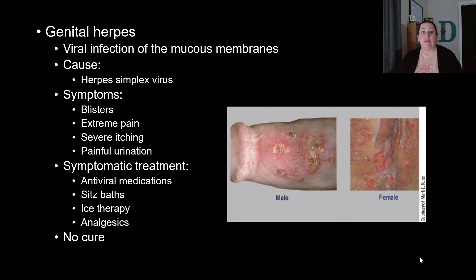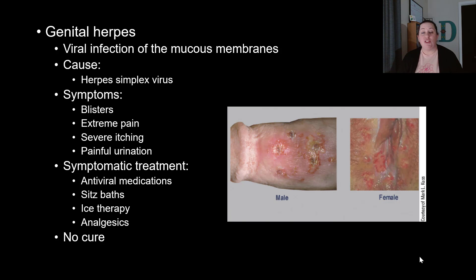Genital herpes is a viral infection of the mucous membranes caused by herpes simplex virus. Symptoms include blisters, extreme pain, severe itching, and painful urination. It is not curable. Treatment is symptomatic, using antiviral medications such as acyclovir to prevent viral replication, along with sitz baths, ice therapy, and painkillers. The blisters can appear on the external genitalia of both males and females.